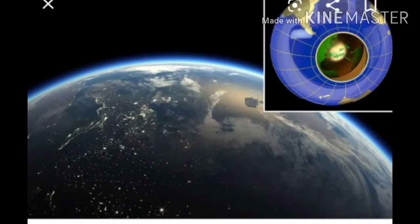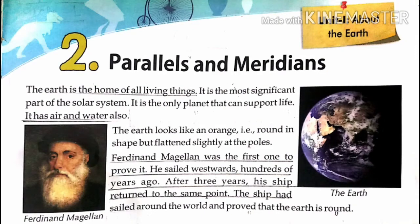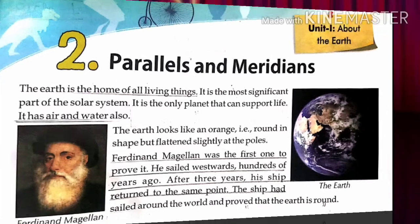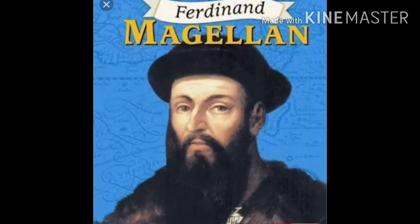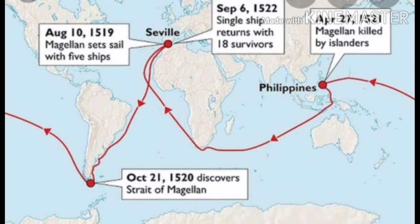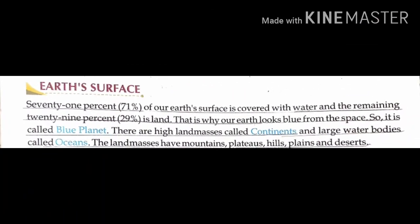Is it flat like a coin? No, the earth is actually not perfectly spherical but very close to the shape of a sphere. It bulges out at the equator and is flattened at the poles. Who proved that earth is round? Ferdinand Magellan was the person who proved that earth is round. When he sailed westward, he returned to the same point, and in this way he proved earth is round.